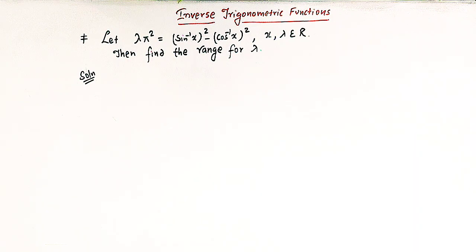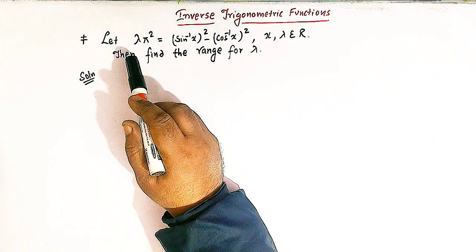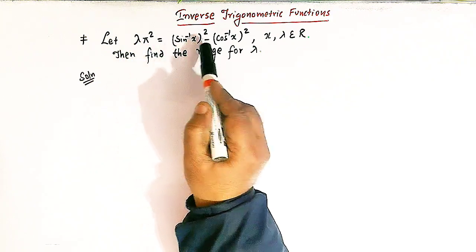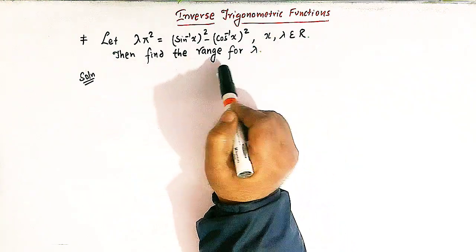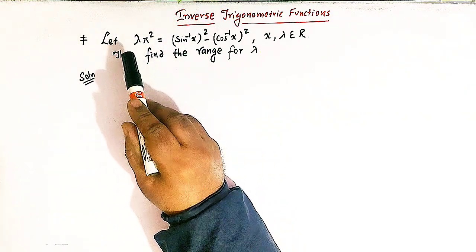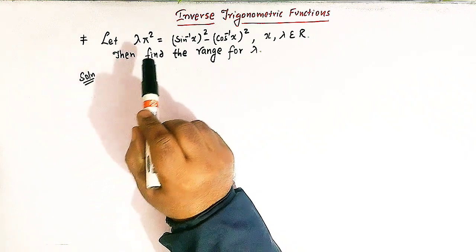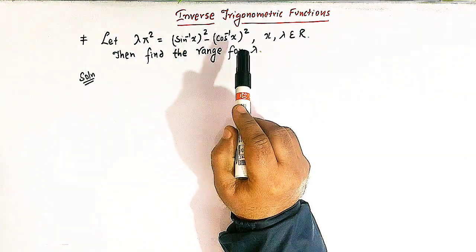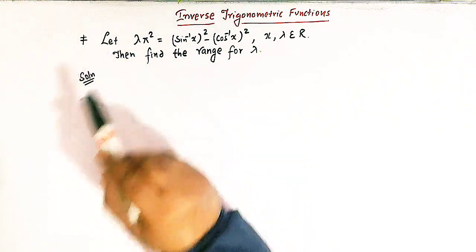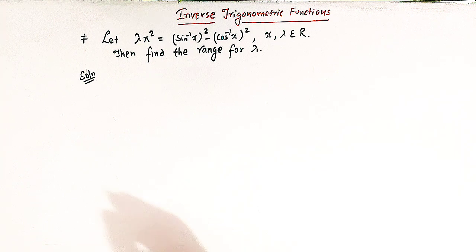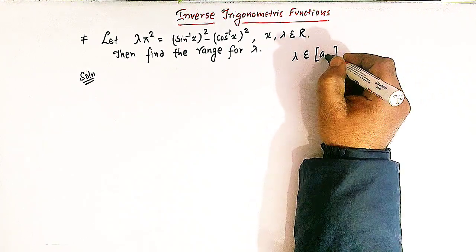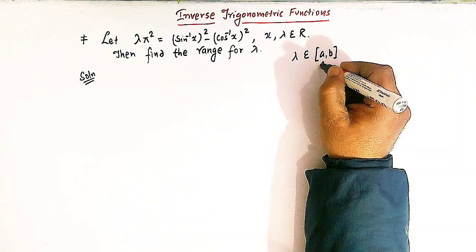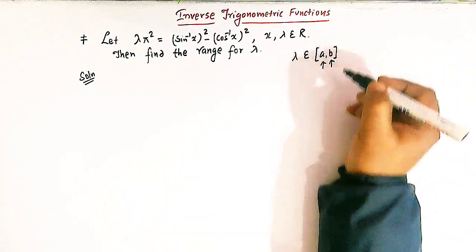Hello viewers, in today's session we are going to discuss an important problem from inverse trigonometric functions. So here we are given an expression: λπ² = sin⁻¹x² - cos⁻¹x², where x and λ belong to the set of real numbers. We have to find the range for this parameter λ. We will make use of some properties of inverse trigonometric functions. Let us assume the range of λ belongs to the interval [a, b], and we have to find the values of a and b.